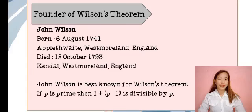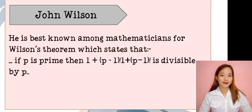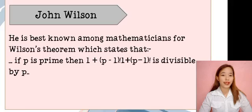To begin with, let me discuss who is the founder of Wilson's Theorem. The founder is John Wilson. He was born on August 6, 1741 and died on October 18, 1793. John Wilson is best known for Wilson's Theorem: if P is prime, then 1 plus P minus 1 factorial is divisible by P. John Wilson is known among mathematicians for Wilson's Theorem.